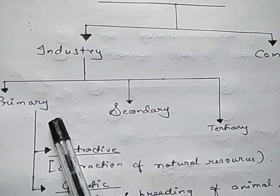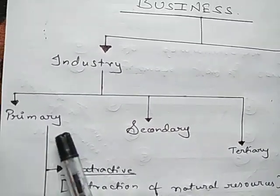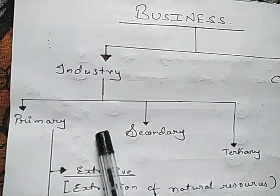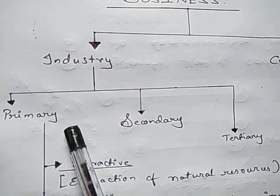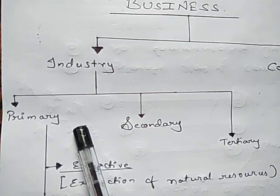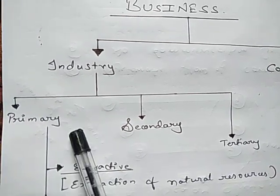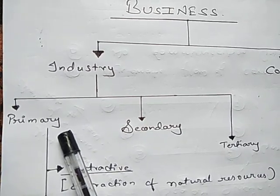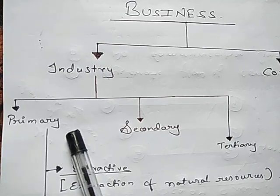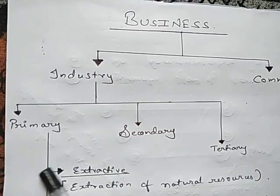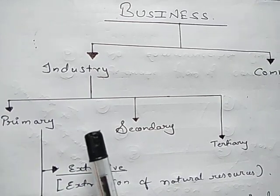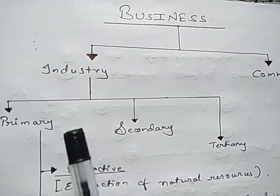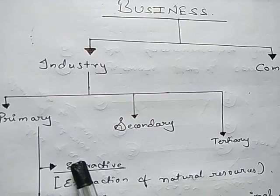Primary industry, as the name suggests, is the basic first type of industry. It has two sub-types. In primary industry, either we extract raw material or products from natural resources — for example, we take out fish from seas, rivers, and oceans, or we take out timber and wood from forests. Or we do the rearing and breeding of animals like cows, buffaloes, sheep, and goats for dairy products, poultry, and meat.